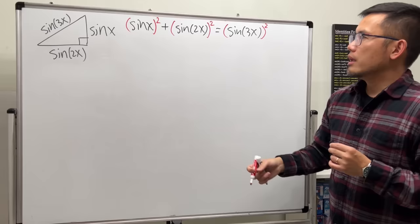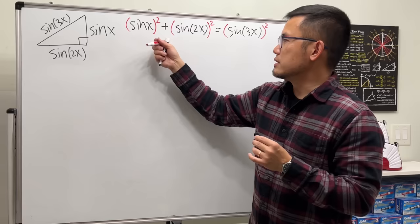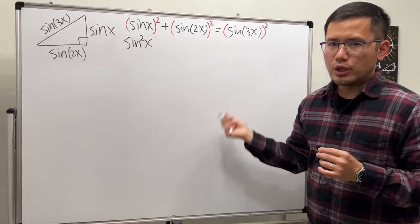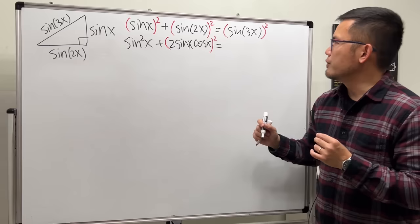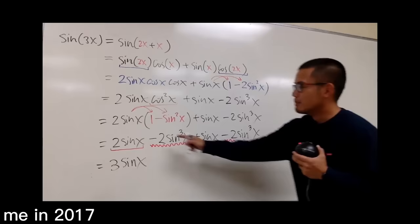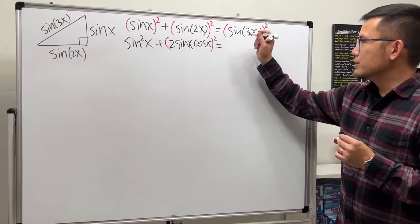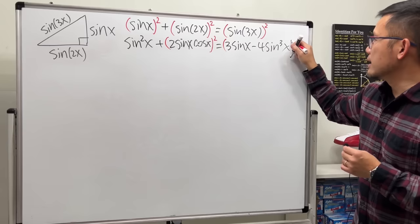Next, we just have to make sure all the angles are the same. This is already sine squared x. But for sine of 2x, we can use the double angle identity, which is 2 times sine x times cosine x, and of course we square that. And do we have a triple angle identity for sine? Yes! So sine of 3x is just 3 sine x minus 4 sine cubed x, and then raise that to the second power.